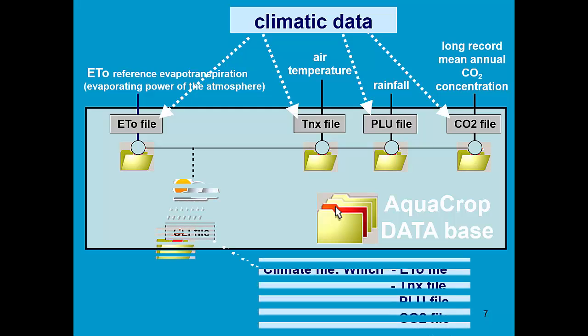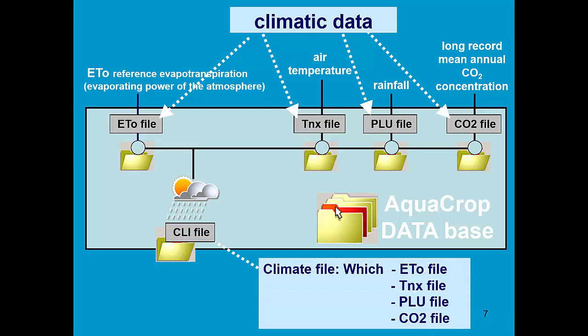Finally, there is a climate file, which is a CLI file, which does not contain any data, but just tells which is the ET node, the temperature, the rainfall, and the CO2 file linked to that particular station.